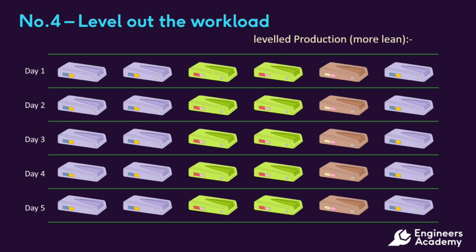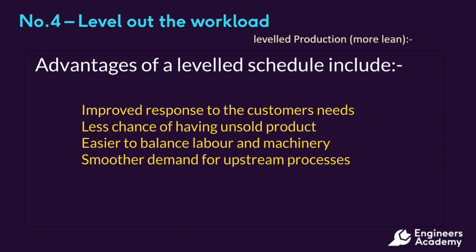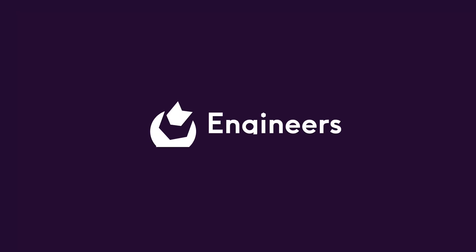Battery production can be leveled on a daily basis, as indicated in our mixed model production schedule from a more lean environment. The advantages of the more leveled system are greater flexibility to make what the customer wants when they want it, a reduced risk of unsold goods, more balanced use of labour and machines, and smoother demand on upstream processes and plant suppliers — making life easier for everybody.